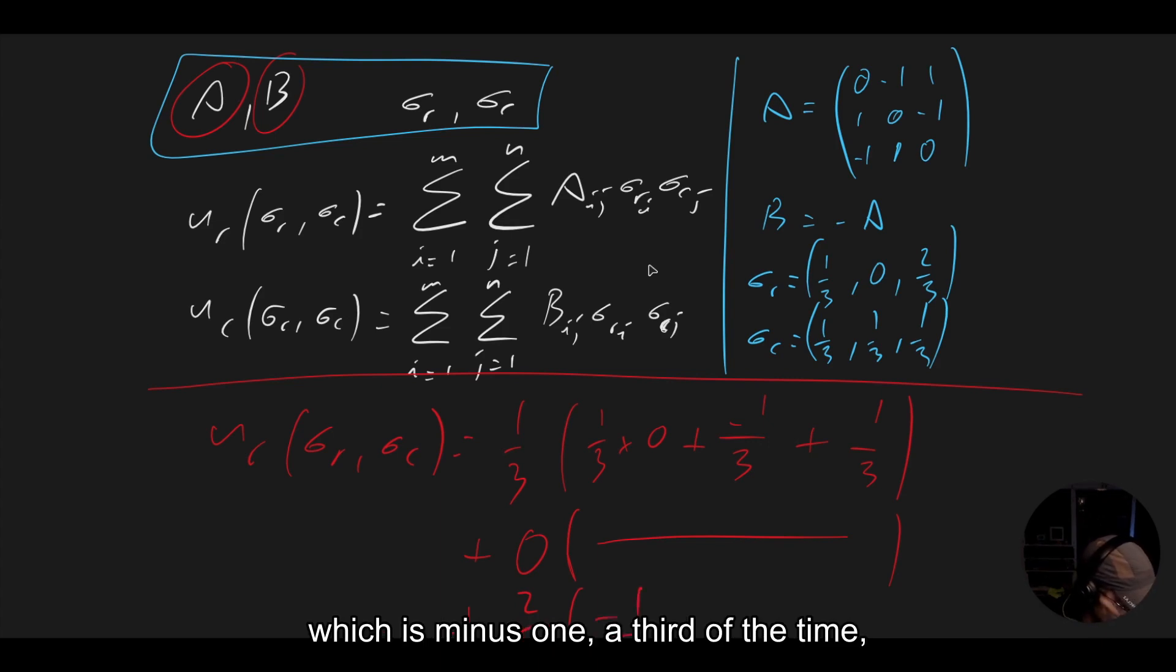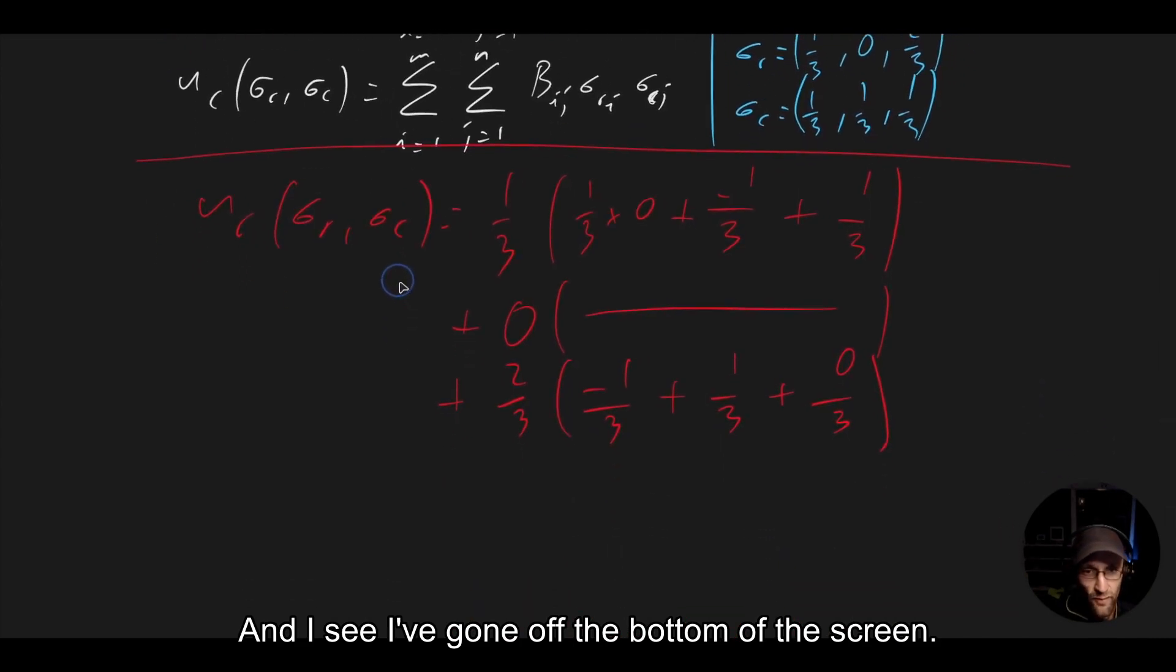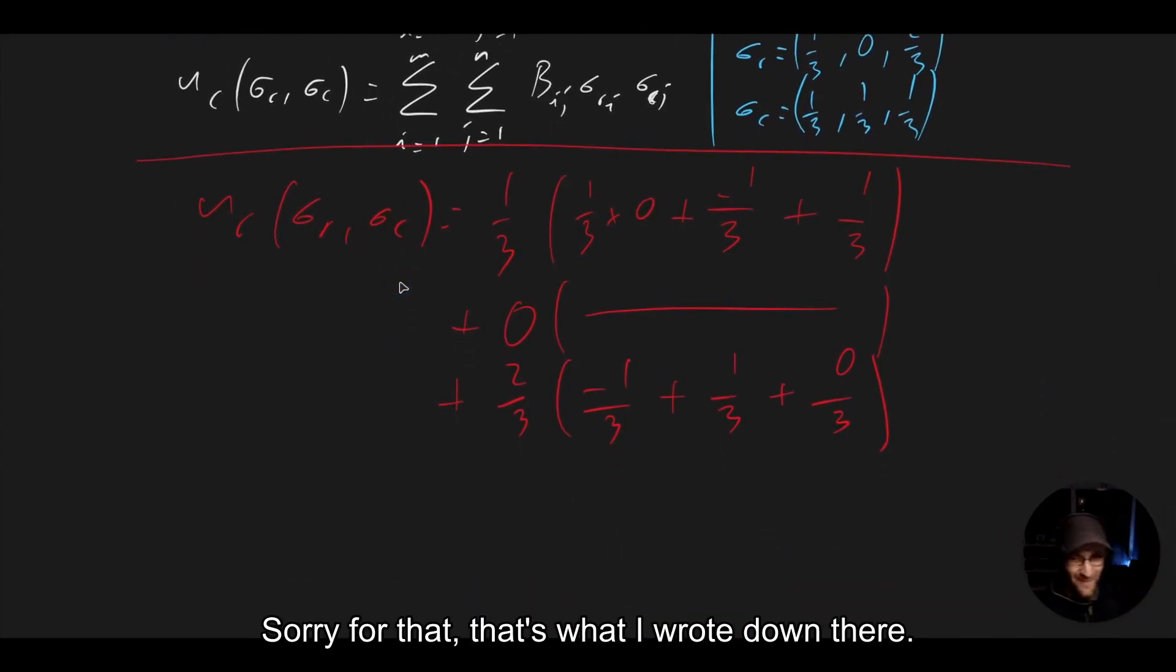And we're going to have plus two thirds what happens in that third row, which is minus one a third of the time, plus one a third of the time, and plus zero a third of the time. And if you look at that, you can see actually that this is zero and this is zero. Let me just close my bracket. And I see I've gone off the bottom of the screen. That's what I wrote down there.